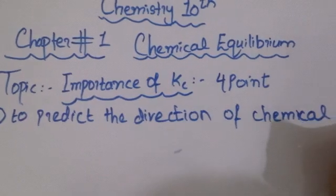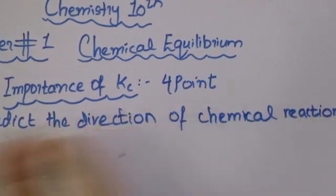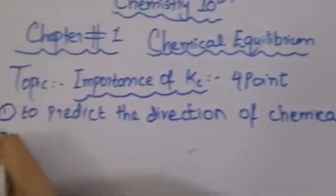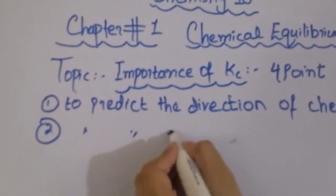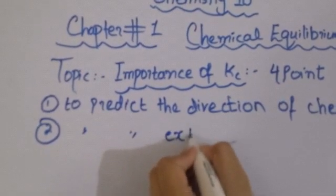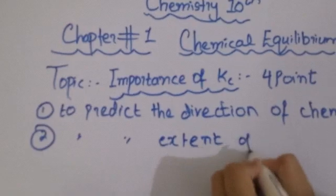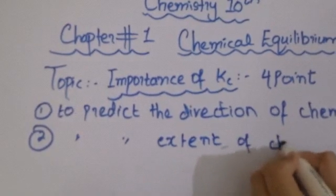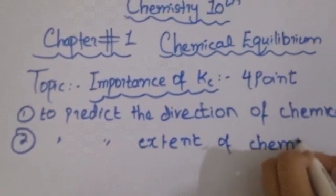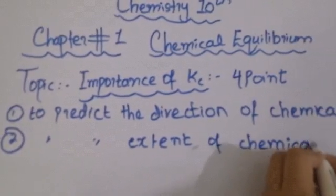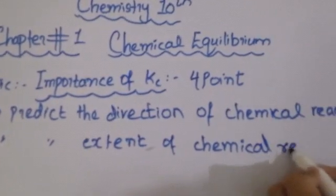The second point is to predict the extent of a chemical reaction — to determine the value or degree to which the chemical reaction proceeds.